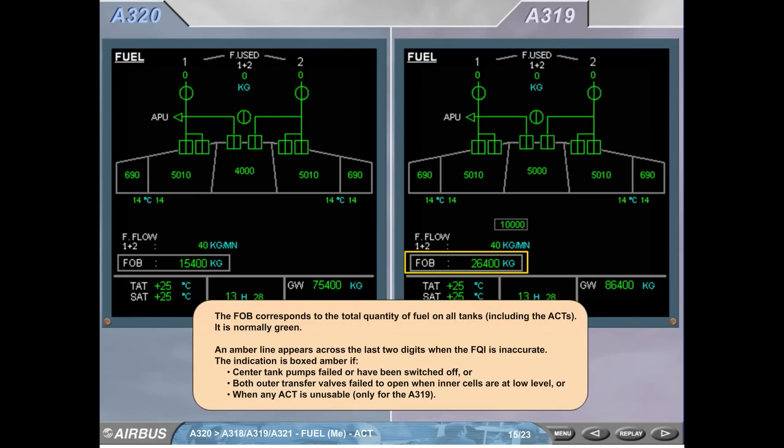The fuel on board corresponds to the total quantity of fuel on all tanks, including the ACTs. It is normally green. An amber line appears across the last two digits when the fuel quantity indicator is inaccurate.